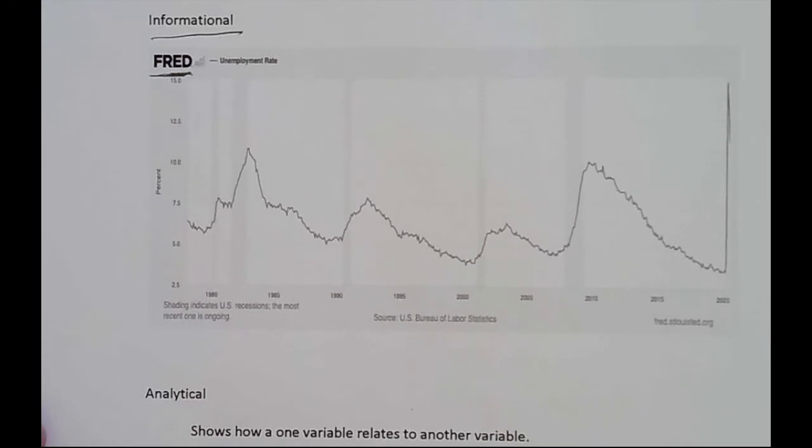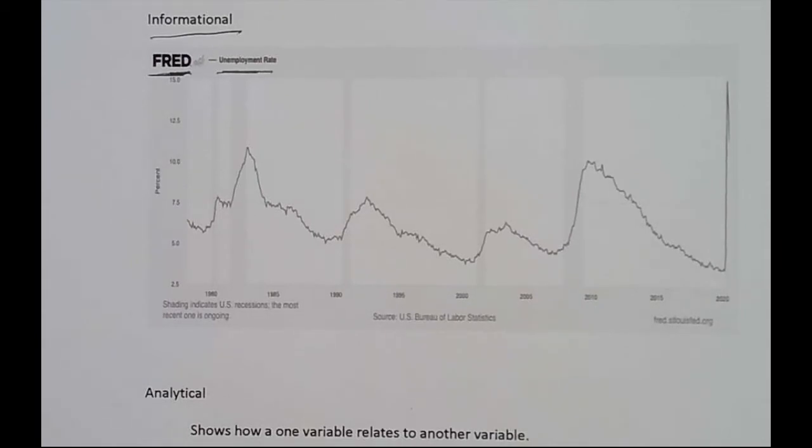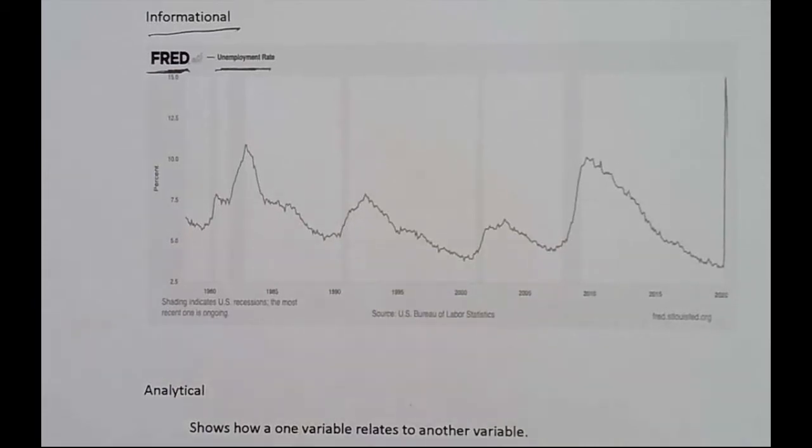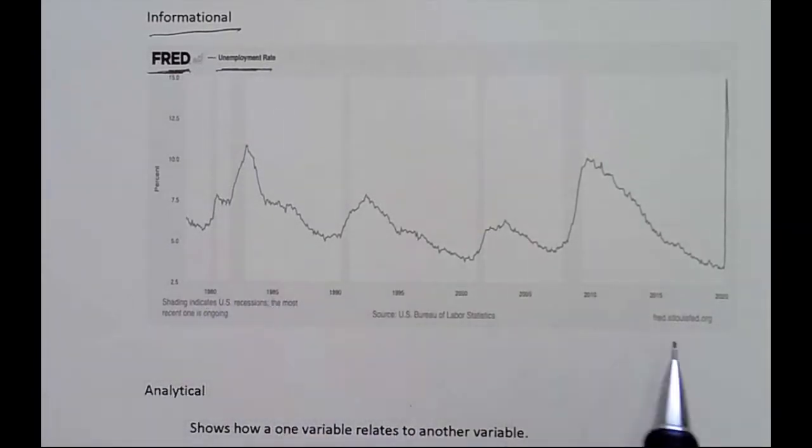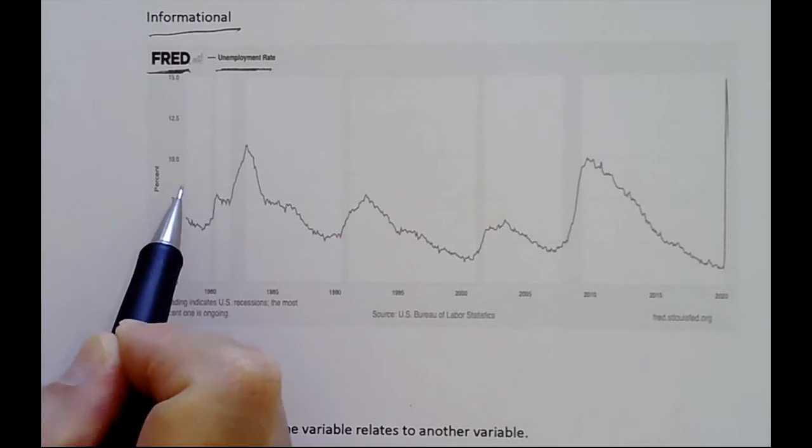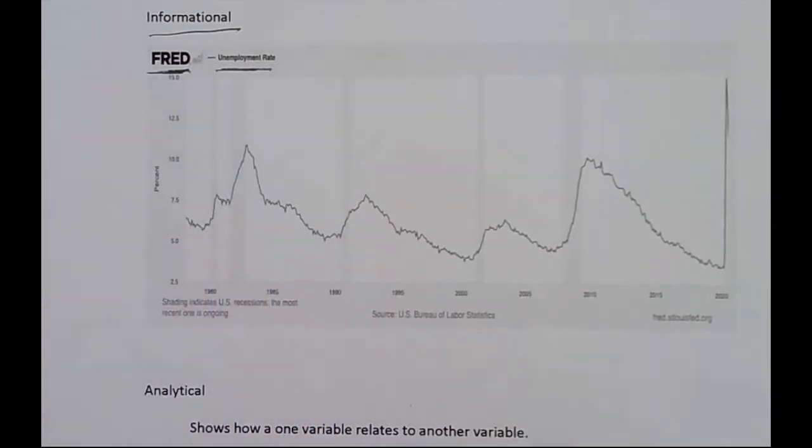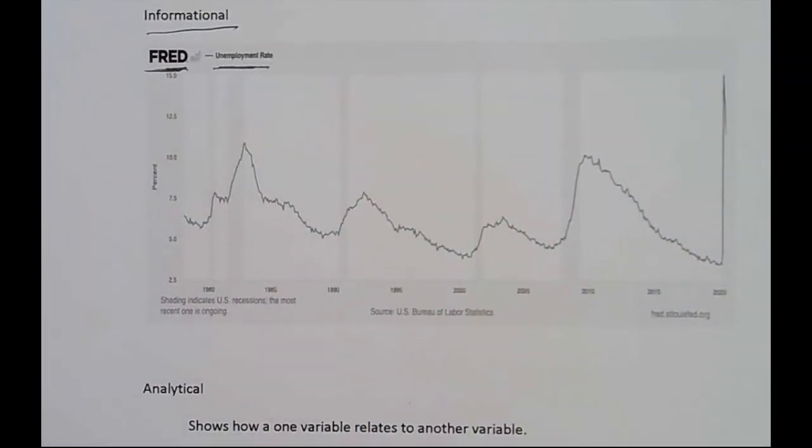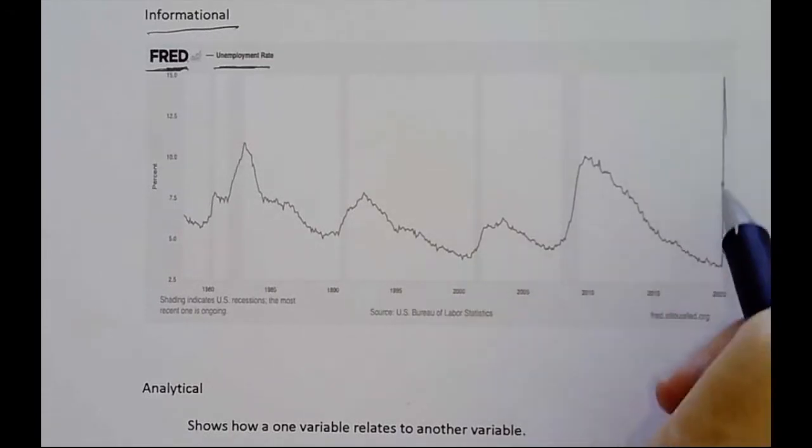This is the unemployment rate, the percent of the labor force that is officially counted as unemployed. This time series data just presents information. There's no analytical reasoning going on here, no cause and effect. We're simply looking at how the unemployment rate varies over time, going back to 1980, 1985, 1990, up to 2020. The shaded areas are recessions, and the latest one is the recession caused by the coronavirus shutdown.